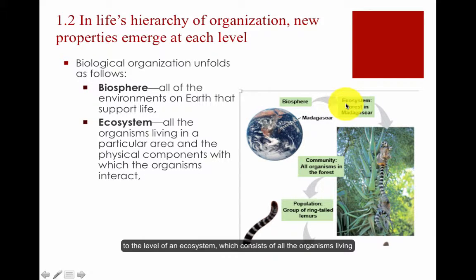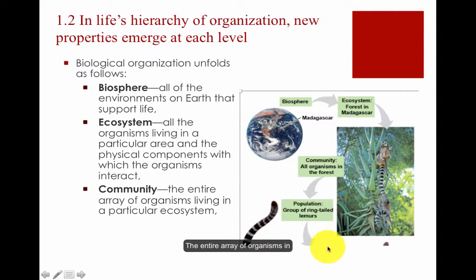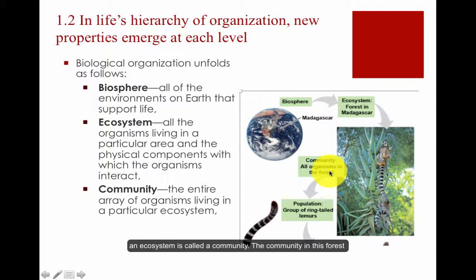An ecosystem consists of all the organisms living in a particular area as well as the physical components with which the organisms interact, such as air, soil, water, and sunlight.